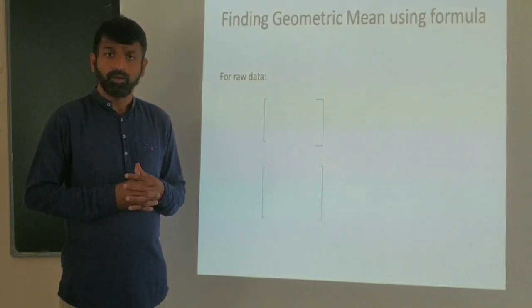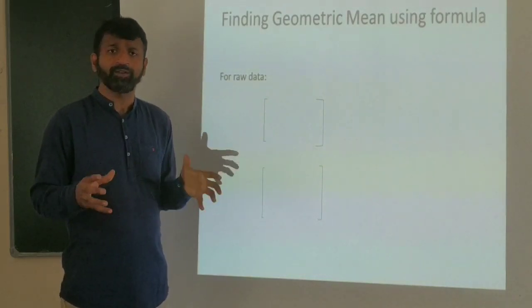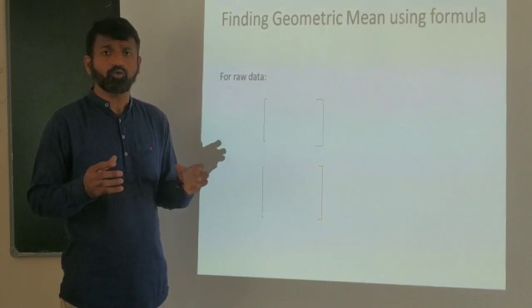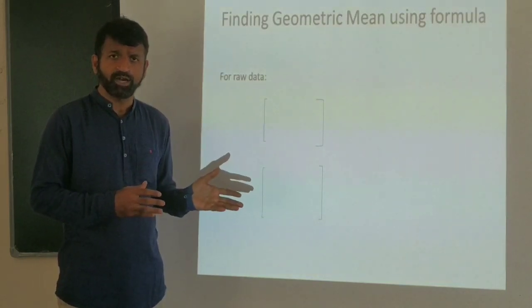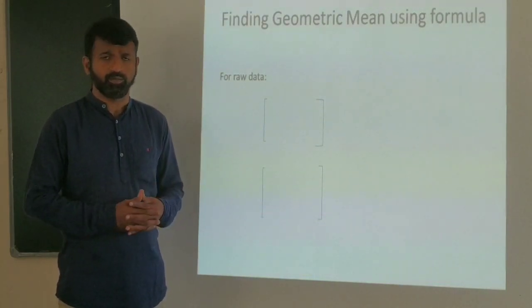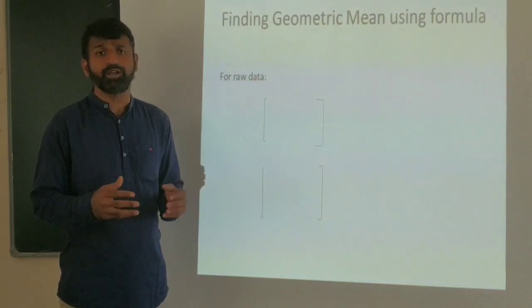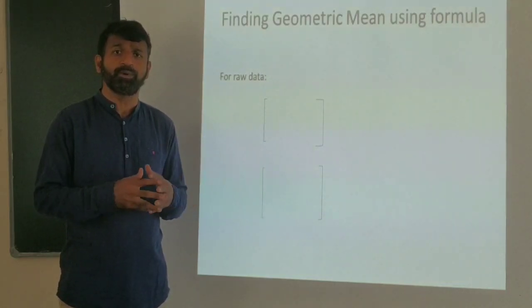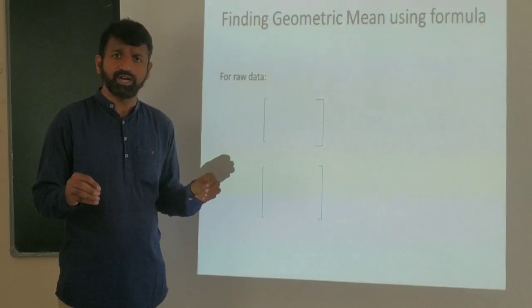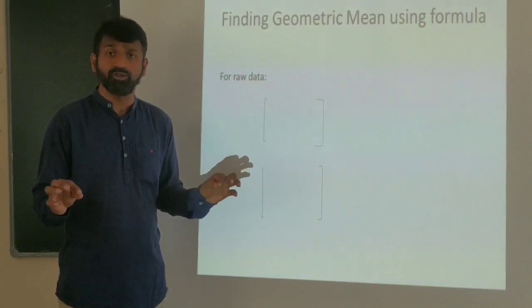The geometric mean computation depends on the type of data. You can compute it for raw data or tabular data. Raw data is data without frequency — the data values are given directly without any associated frequency.